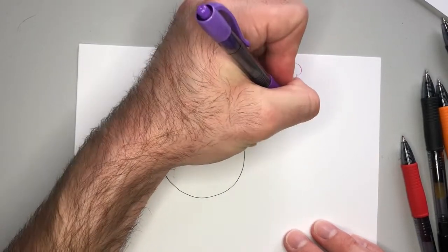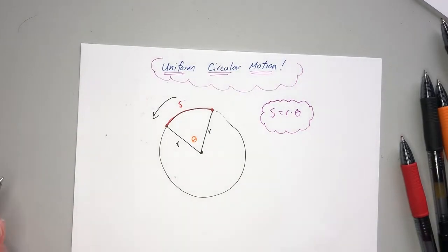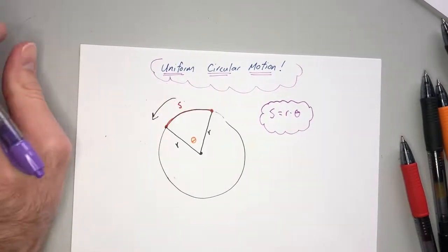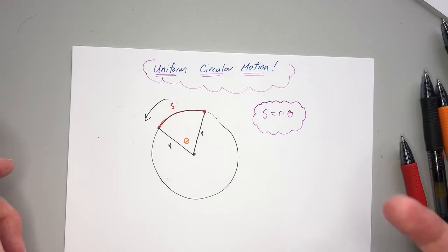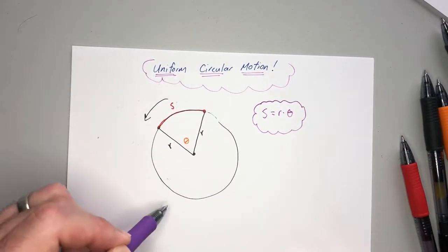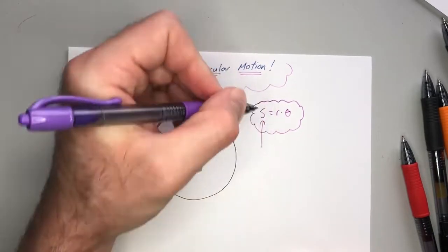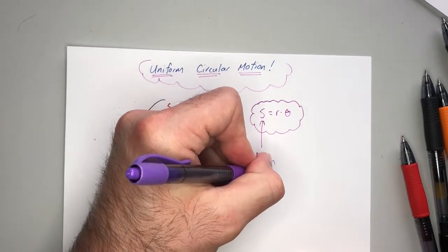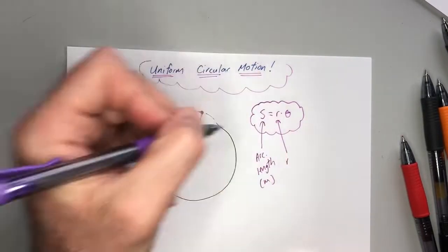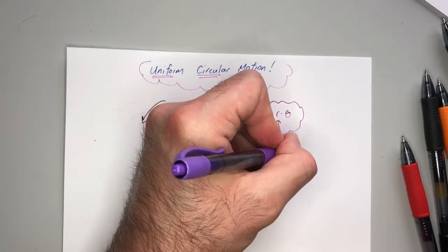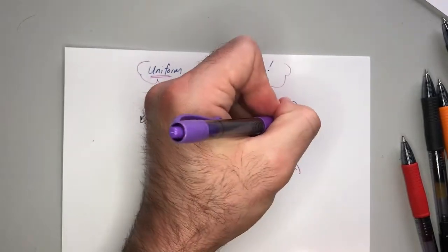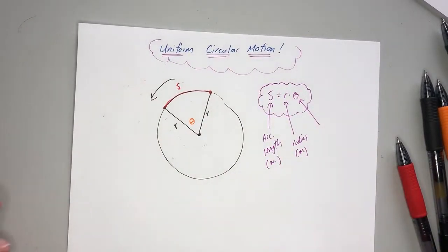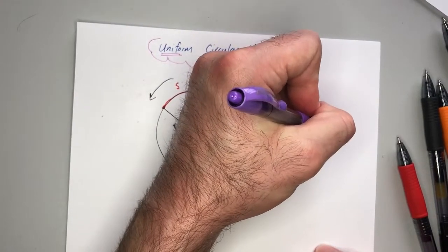The formula relating all three is Equation 1: s = r times theta, where s is arc length measured in meters, r is the constant radius also in meters. One thing to note: when moving counterclockwise we count that as positive, similar to the unit circle. In uniform circular motion it's very helpful to work in radians rather than degrees, so theta, your angle, will be measured in radians.